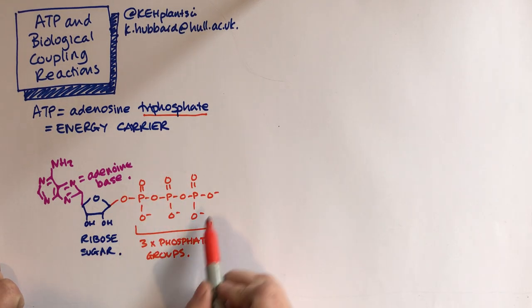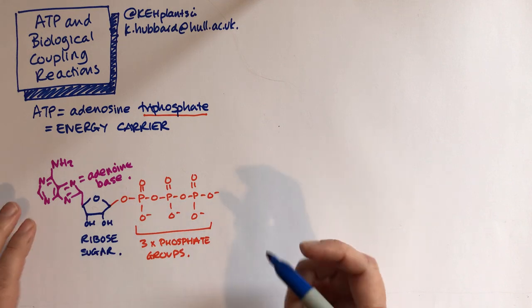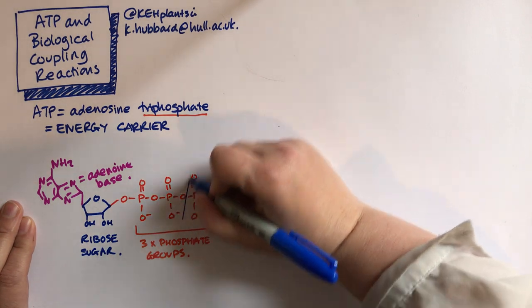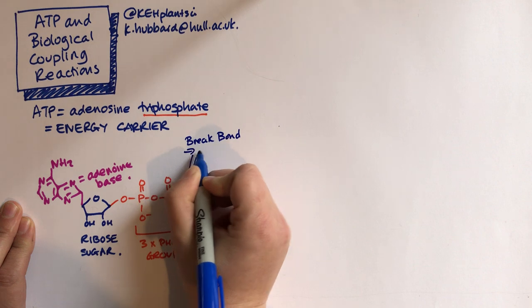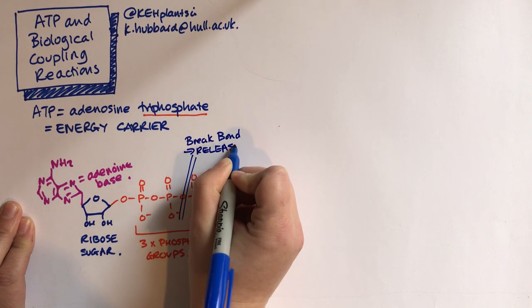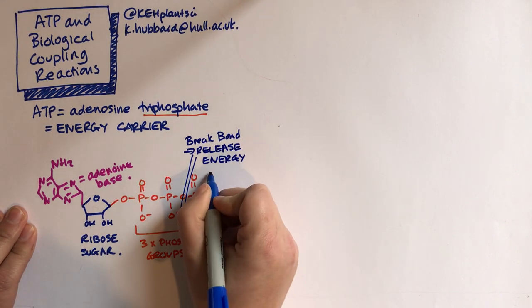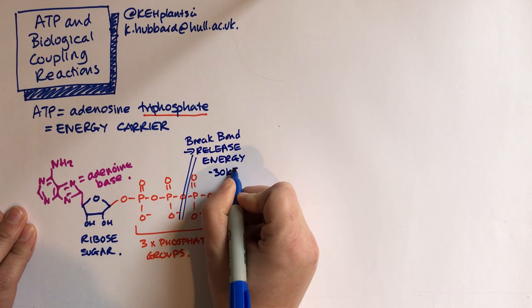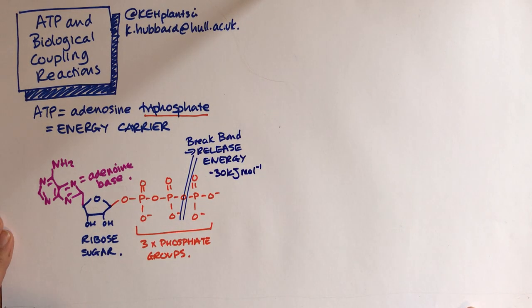So although this is a perfectly stable molecule, there's a lot of chemical potential energy stored in that molecule. Which means that if we break that molecule and let those oxygens go off in different directions, we're going to release some of that energy. So if we break that bond there, we will release energy. And we release quite a lot of energy - we release 30 kilojoules per mole of ATP. That's quite a lot of energy biologically speaking, and we can use that energy to do useful work.